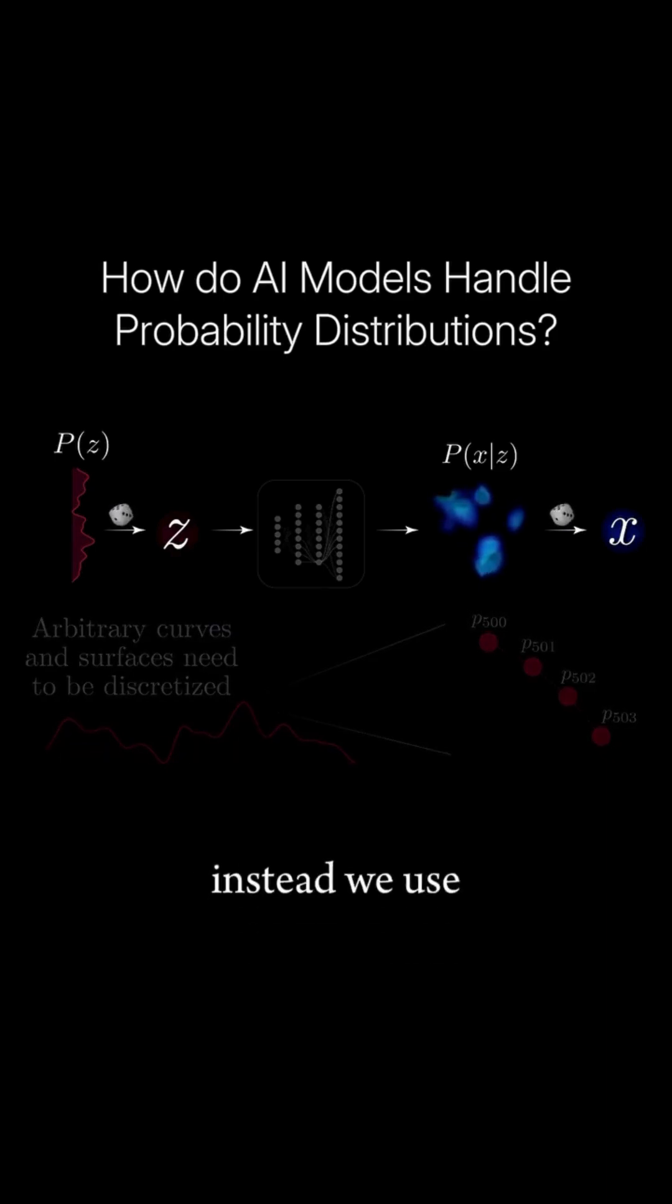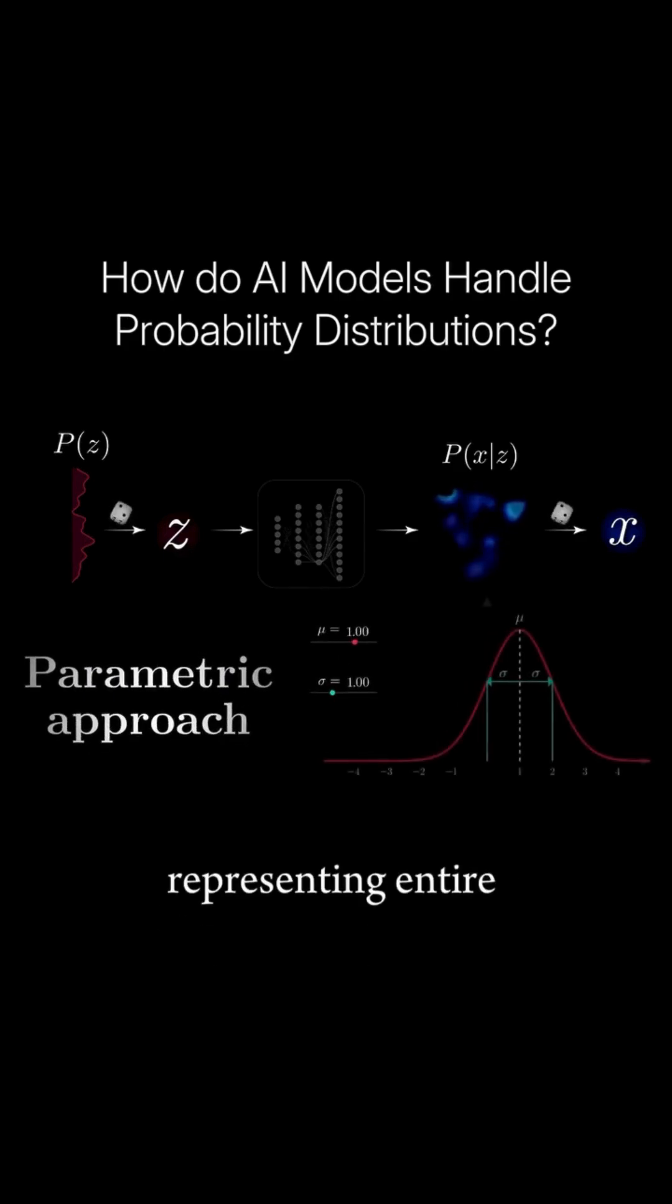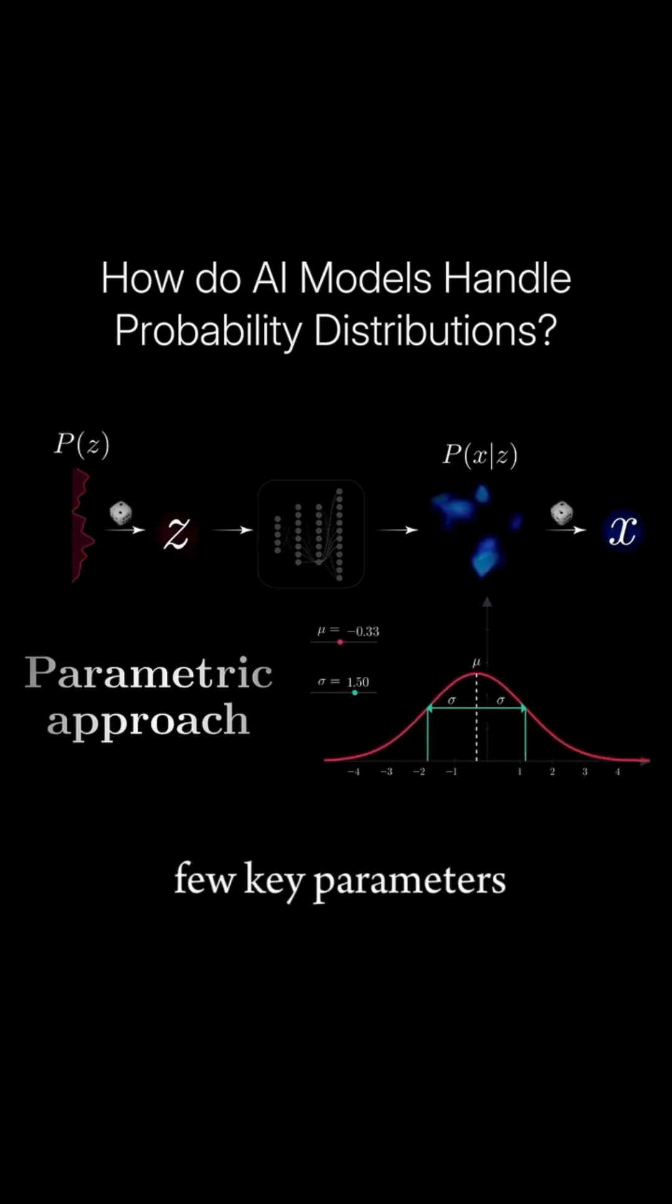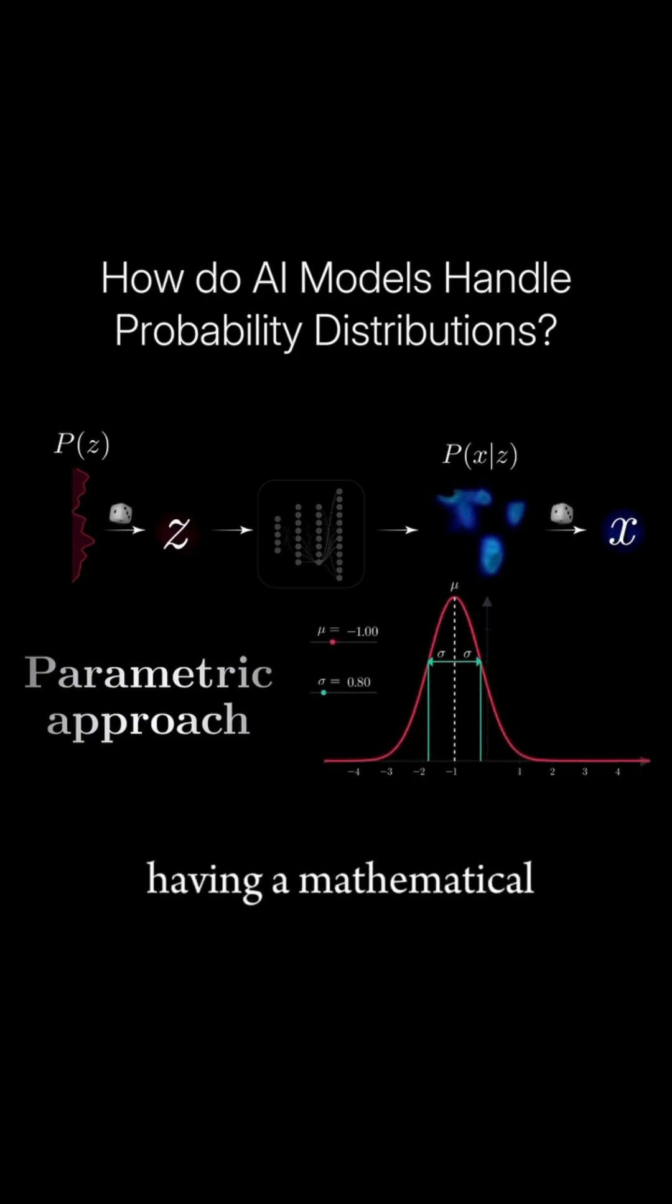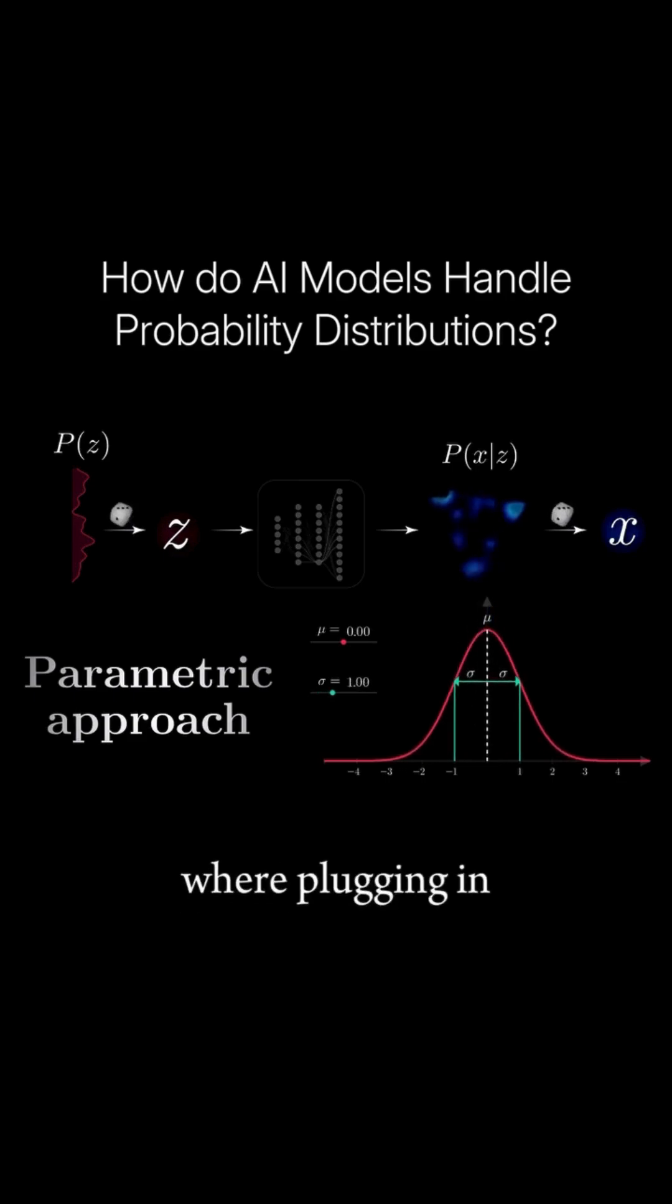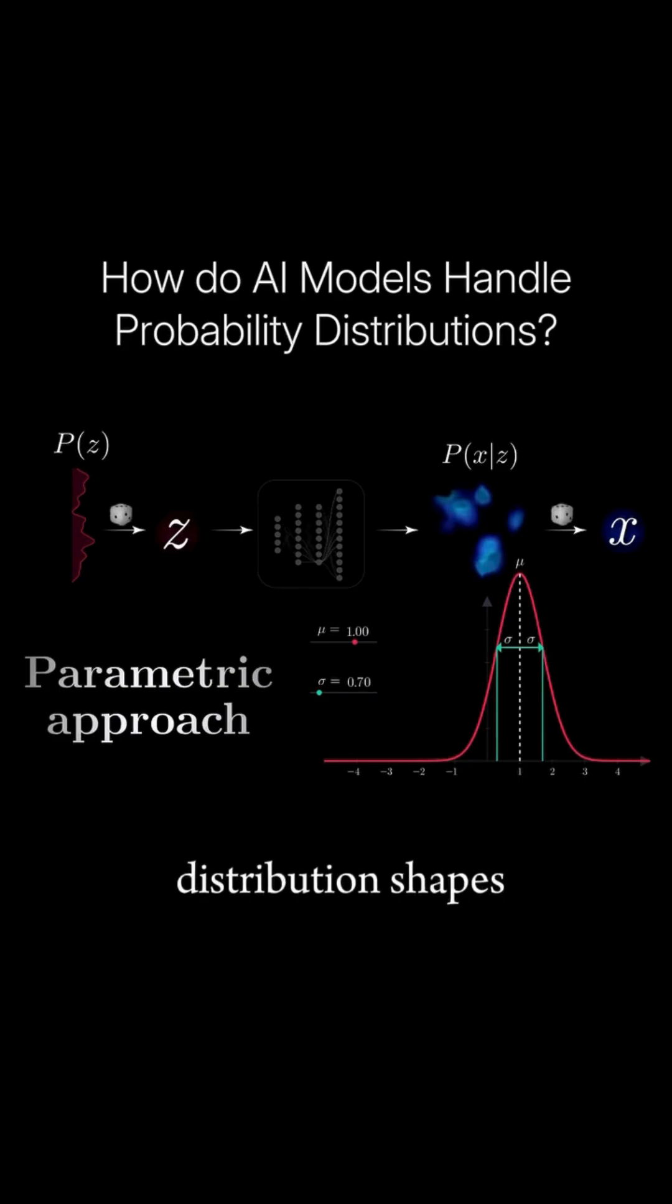Instead, we use what's called a parametric approach, representing entire distributions with just a few key parameters. This is like having a mathematical formula with adjustable knobs, where plugging in different values for a few parameters fully determines different distribution shapes.